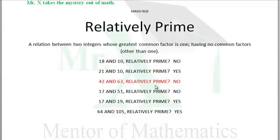42 and 63, relatively prime? Oh no, 7 goes into both of these. 42 is evenly divisible by 7, 63 is evenly divisible by 7, they are not relatively prime.